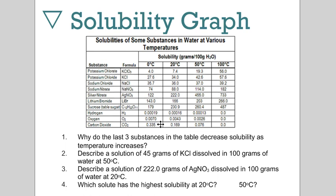Number two, describe a solution of 45 grams of KCl dissolved in 100 grams of water at 50 Celsius. We're talking about potassium chloride, and at 50 Celsius we would expect to be able to dissolve 42.6 grams of that solute per 100 grams of water. Well, we dissolved 45 grams at that temperature, so if you were describing it, you would say it's supersaturated.